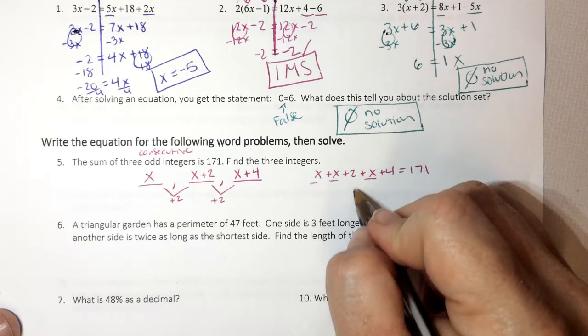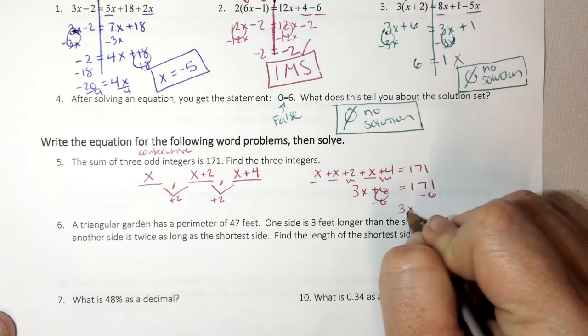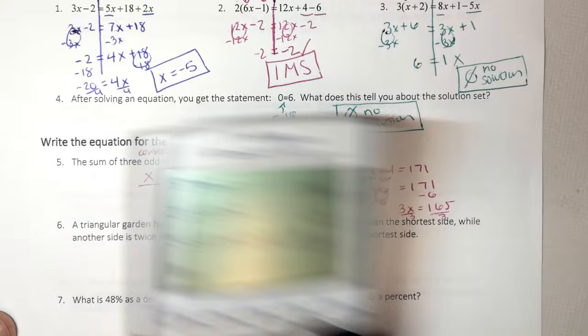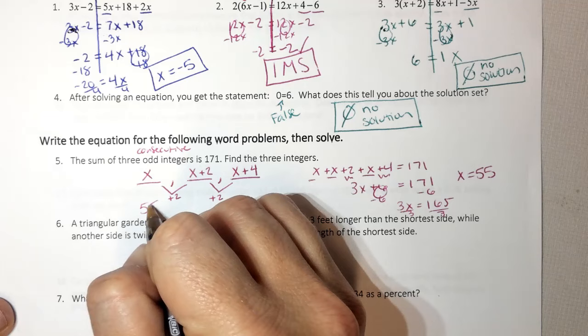So knowing that, I have x plus x plus x, which is 3x. And I have 2 plus 4, which is 6 equals 171. I'm going to do minus 6 minus 6. I get 3x equals 165. Divide both sides by 3. And I get 55. Now I'm not done because it wants all three numbers. So I have x, which is 55, plus 2, which is 57. 55 plus 4, which is 59.